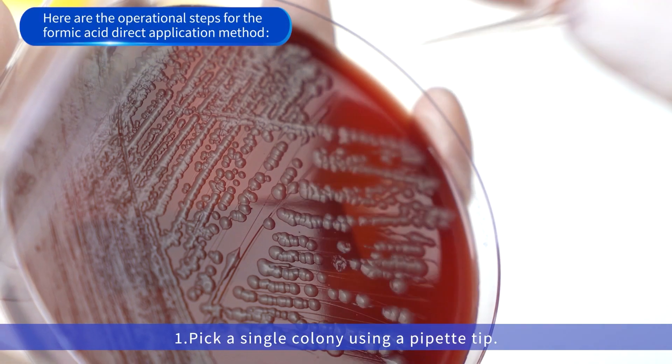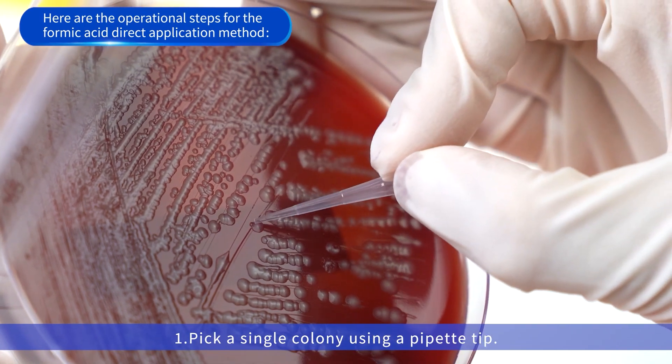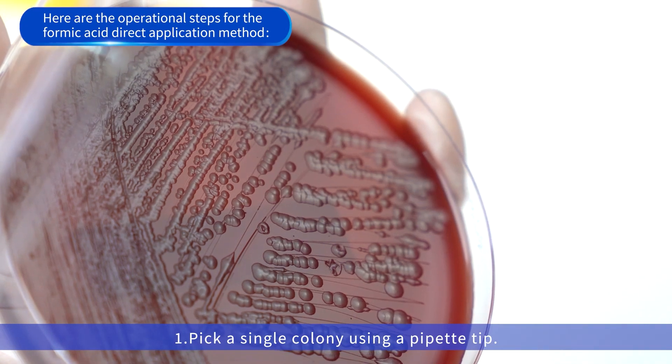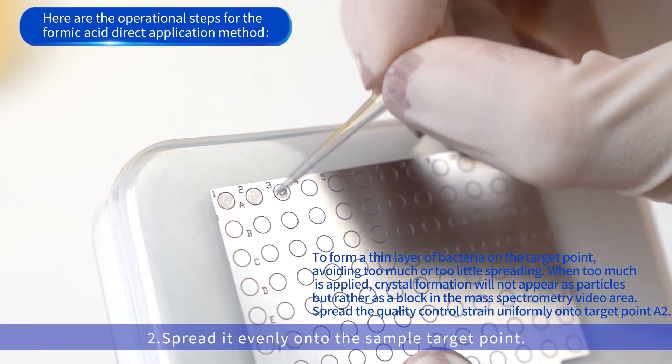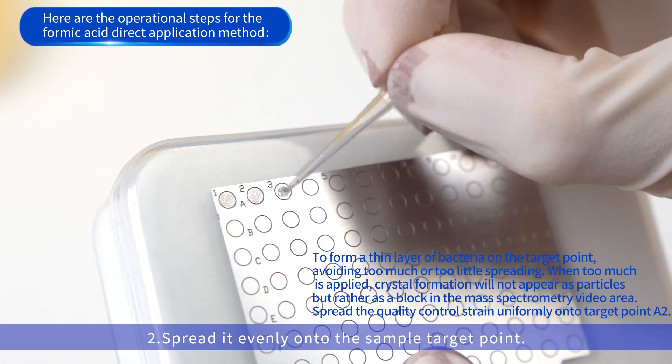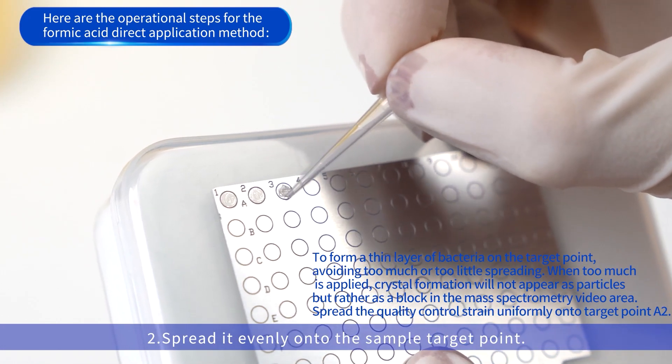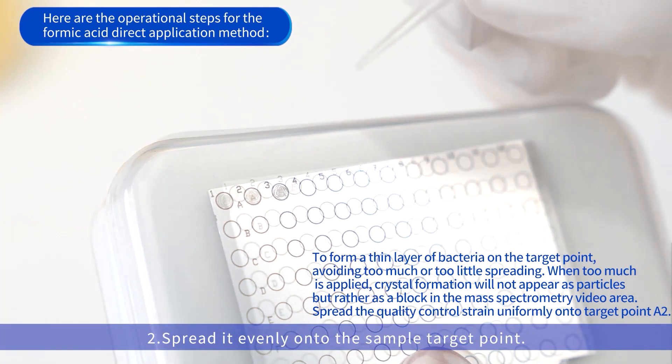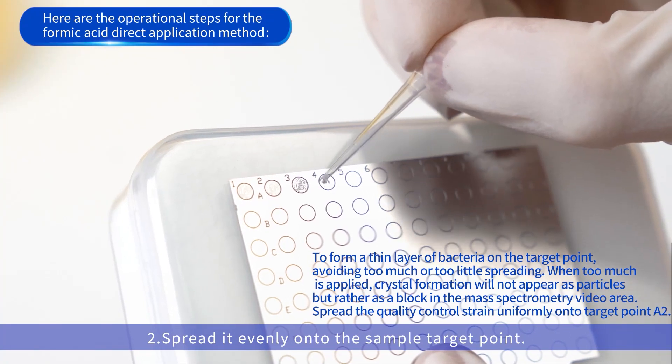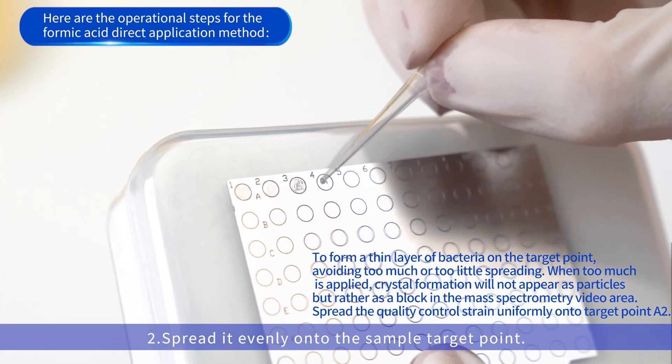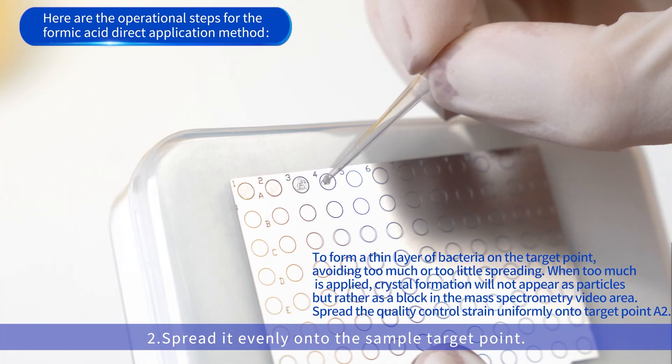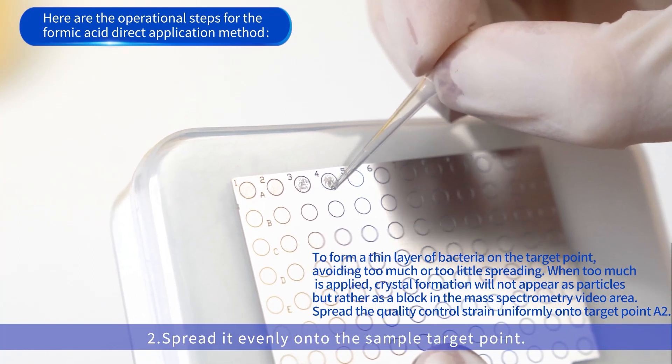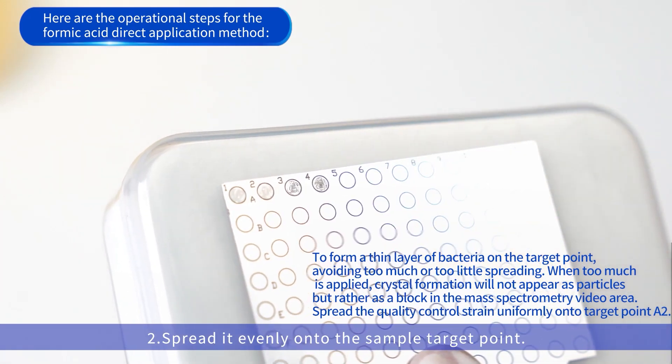Here are the operational steps for the formic acid direct application method. First, pick a single colony using a pipette tip. Second, spread it evenly onto the sample target point to form a thin layer of bacteria on the target point, avoiding too much or too little spreading. When too much is applied, crystal formation will not appear as particles but rather as a block in the mass spectrometry viewing area. Spread the quality control strain uniformly onto target point A2.